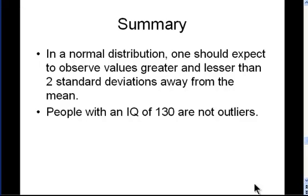A real-world example: people with an IQ of 130 are not outliers. Most IQ tests have a mean of 100 and standard deviation of 15. Two standard deviations above the mean corresponds to an IQ of 130. Anyone who scores 130 or greater is not necessarily an outlier—they may just be part of the normal distribution.